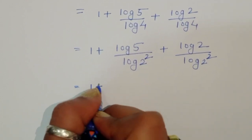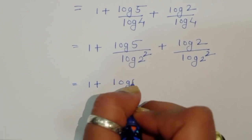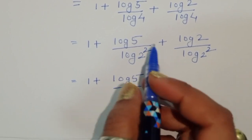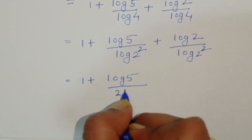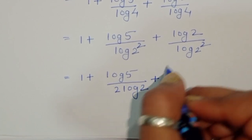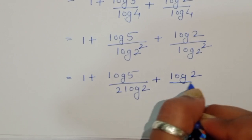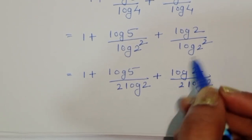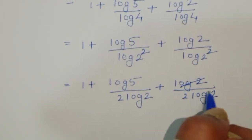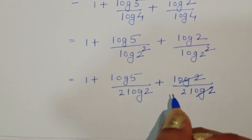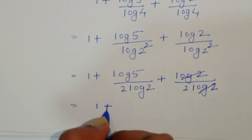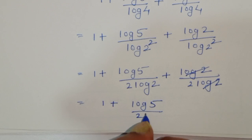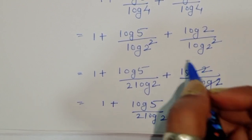Using the power rule, log of 2 squared equals 2 times log of 2. So we have 1 plus log of 5 divided by 2 log of 2, plus log of 2 divided by 2 log of 2. The log of 2 in the last term cancels, giving 1 plus log of 5 divided by 2 log of 2, plus 1 over 2.